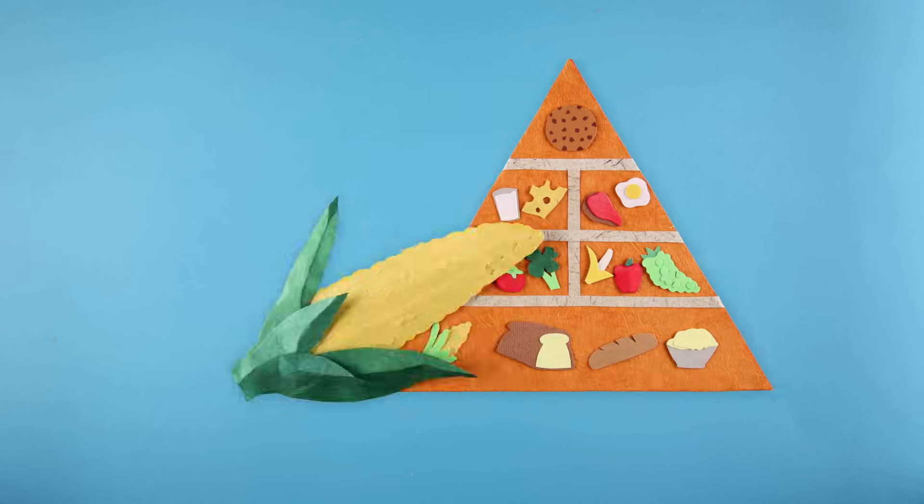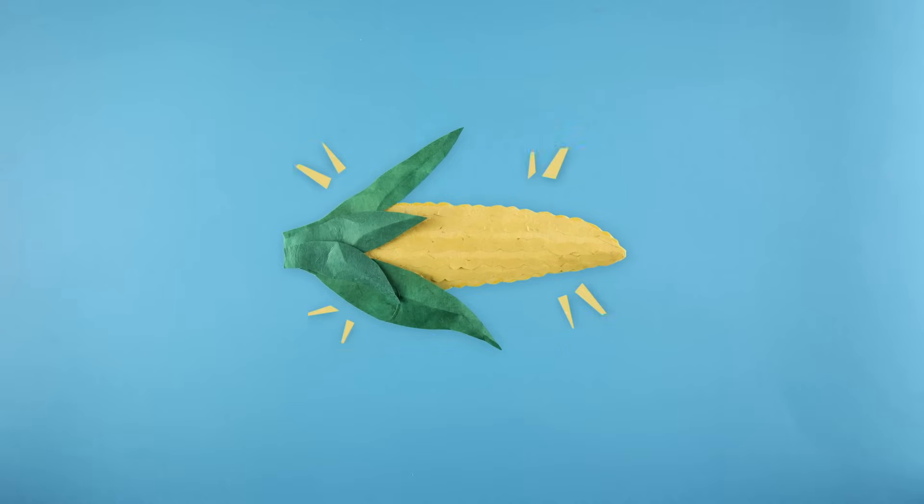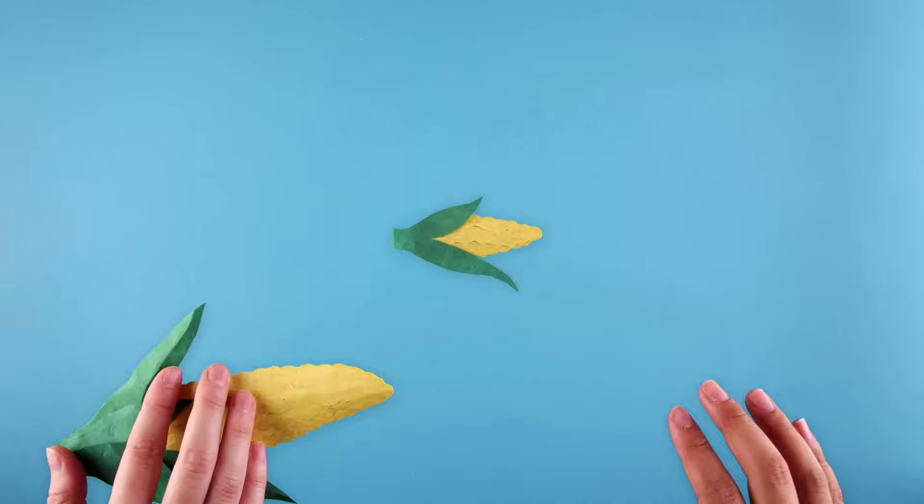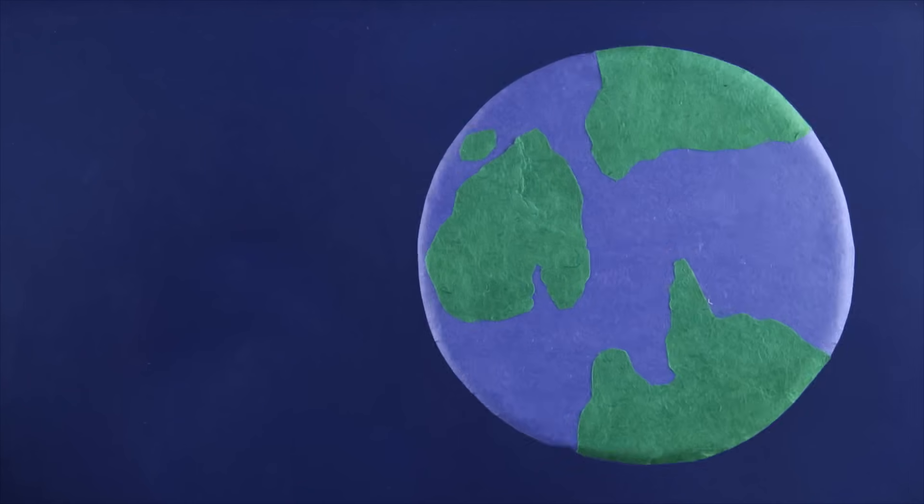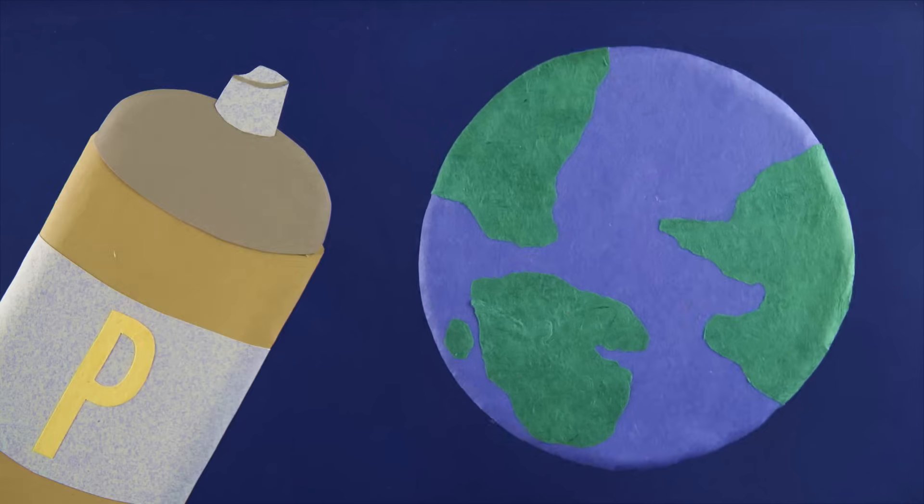As populations have grown, monoculture, single-crop farming, has helped us feed people efficiently. But it's also left our food vulnerable to extensive attack by pests. In turn, we've become more dependent on pesticides.